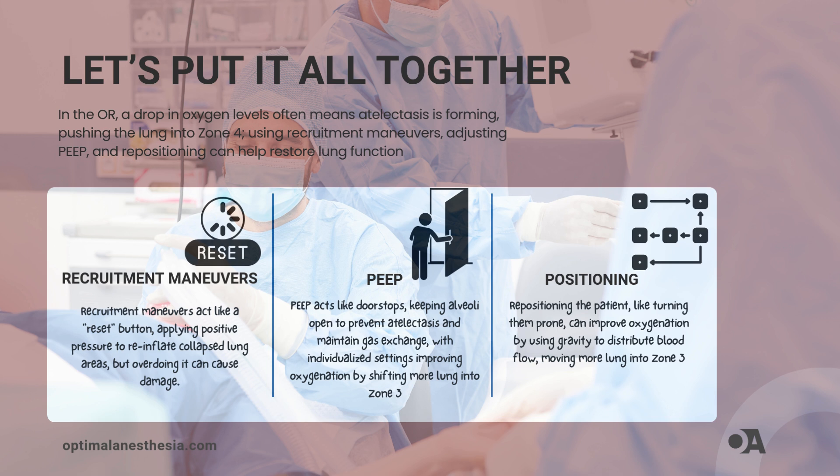Number three: positioning — moving the furniture around. Sometimes simply changing the position of the patient is all it takes to optimize those lung zones. Ever noticed how oxygenation improves when you turn a patient prone? It's because gravity helps distribute blood flow more evenly, pushing more of the lung into Zone 3. According to Basic Physiology for Anesthetists by Hemmings and Egan, patient positioning plays a significant role in redistributing blood flow across lung zones.